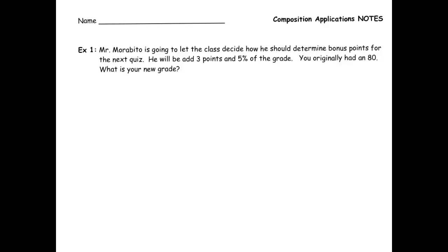So if you think about this, we have an 80%, we're going to get 3 points and an extra 5% of the grade. So does it matter if we add the 3 points first, then take the 5%, or do the 5%, then add the 3 points?